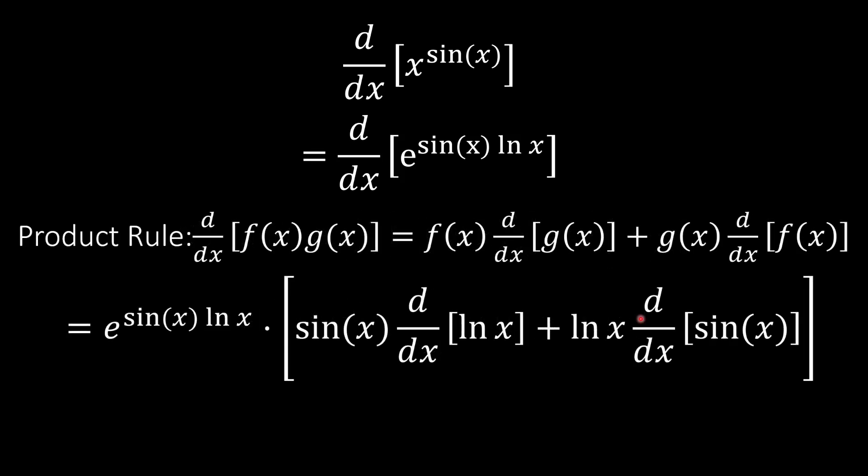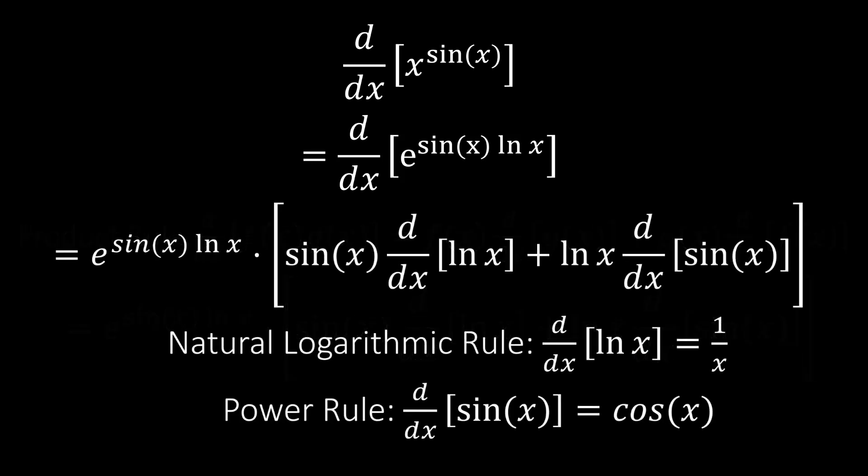So that means we apply the product rule over here, which is the product rule. Sine is represented as f of x, and ln is represented as g of x. As you can see, we're doing the derivatives. Here's the derivative of ln x, which would be 1 divided by x, and here's the derivative of sine x, which would be cos of x.